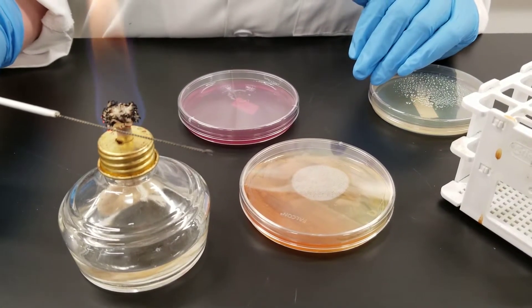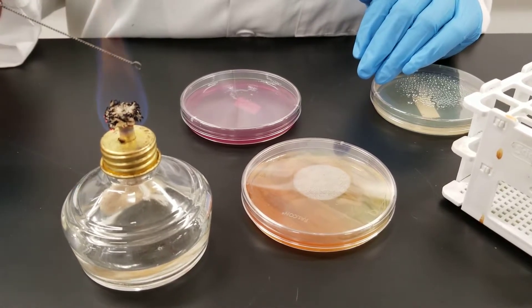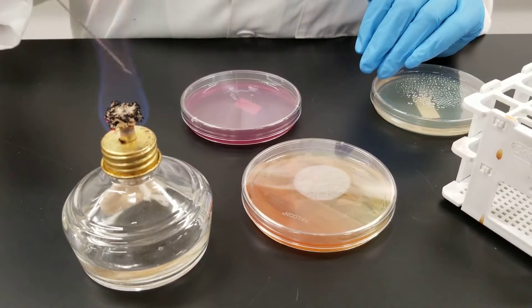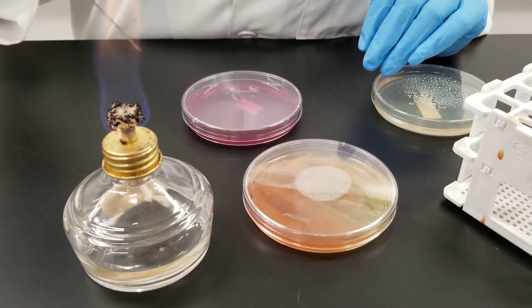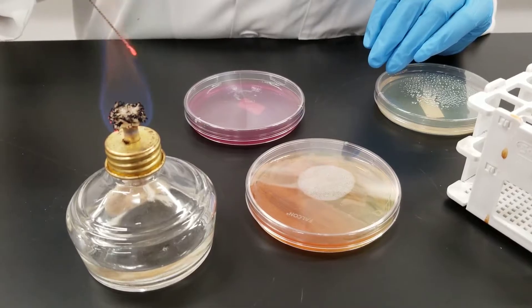I'm going to show you how to inoculate from a plate to a plate. First thing we always do is you want to sterilize the loop, get it so it's nice glowing red.